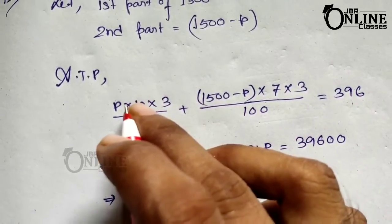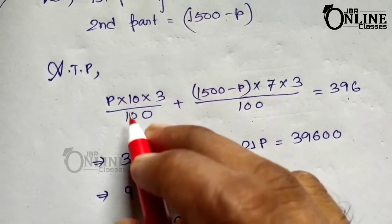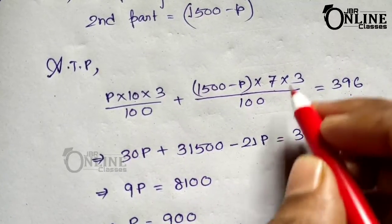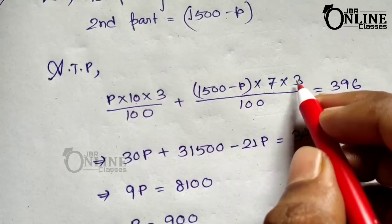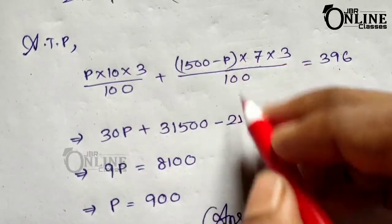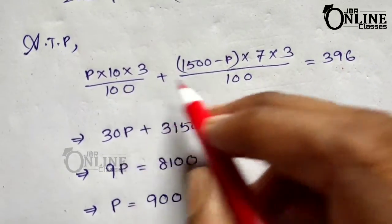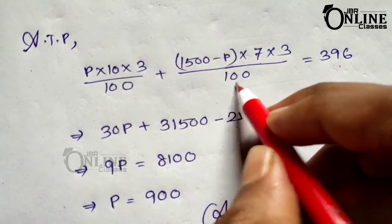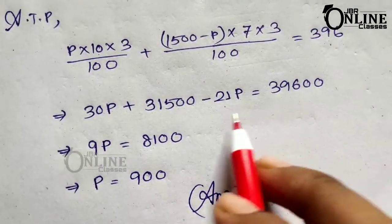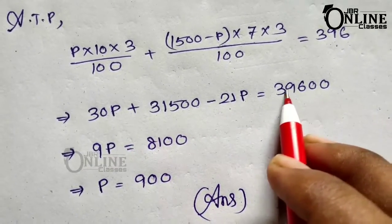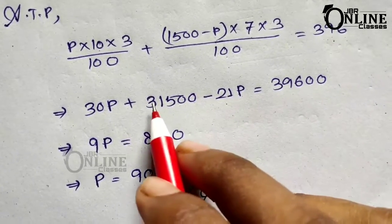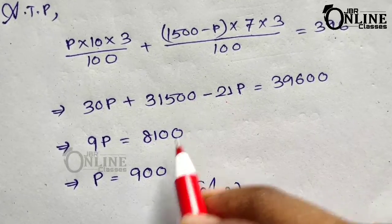Taking LCM as 100: 30P plus 21 into (1500 minus P) equals 39600. So 30P plus 31500 minus 21P equals 39600. That gives 9P equals 39600 minus 31500 equals 8100. Therefore P equals 900. So the first part is rupees 900.